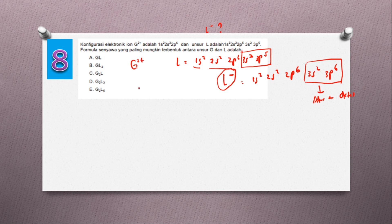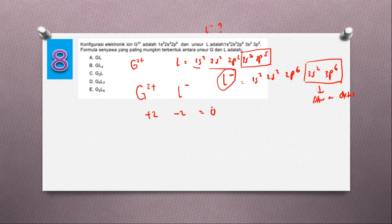Sekarang kita mau cari formula senyawanya. Kita punya G2+ dan L minus 1. Muatannya harus sama supaya menghasilkan senyawa yang netral. Kalau G-nya 2+, L harus minus 2 total supaya 0. Supaya dia minus 2, di sini harus dikali 2. Jadi senyawanya adalah GL2. Jawabannya adalah B: GL2.